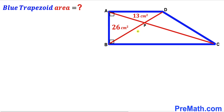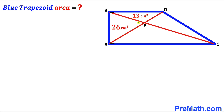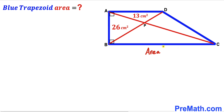In this video we have got this blue trapezoid ABCD along with these diagonals AC and BD. As you can see in this given diagram, these two diagonals intersect each other at this point P, and as a result we are ended up with two triangles: triangle ABP and triangle APD. The area of triangle APB is 26 centimeter square whereas the area of triangle APD is 13 centimeter square, and now our task is to calculate the area of this whole blue trapezoid ABCD.